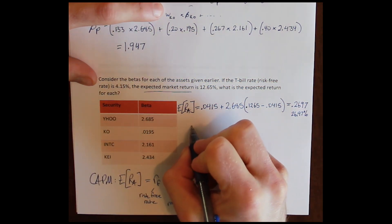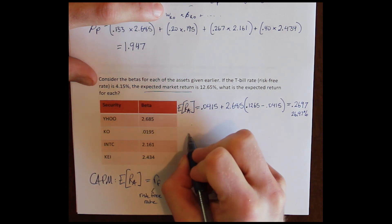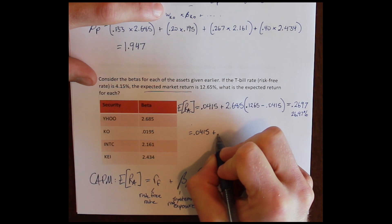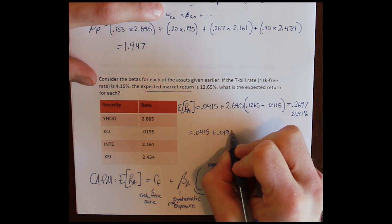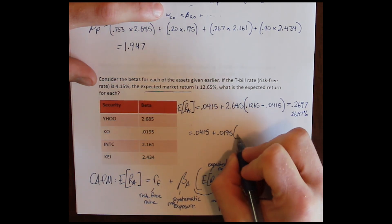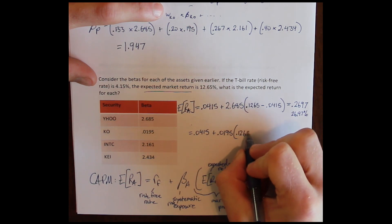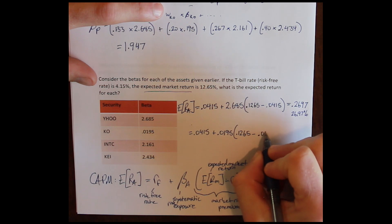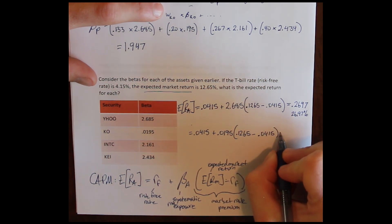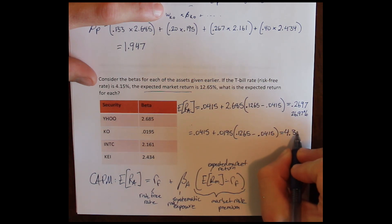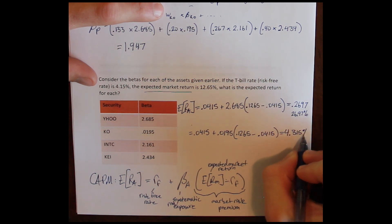We can do it for all of our stocks. For Coca-Cola: risk-free rate, plus the beta for Coca-Cola, 0.0195. Everything else is the same — the market risk premium is the expected return on the market minus the risk-free rate. We get an expected return for Coca-Cola of 4.315%.